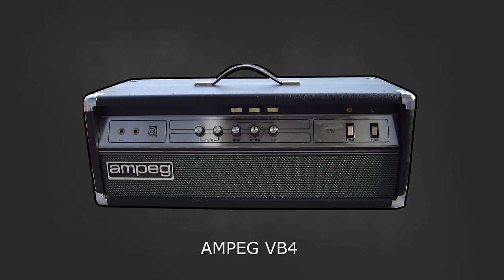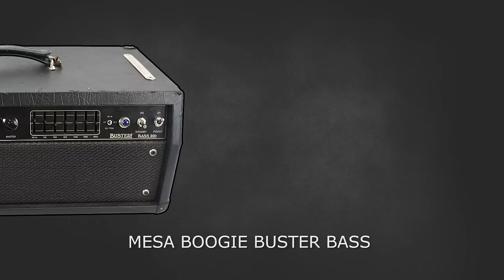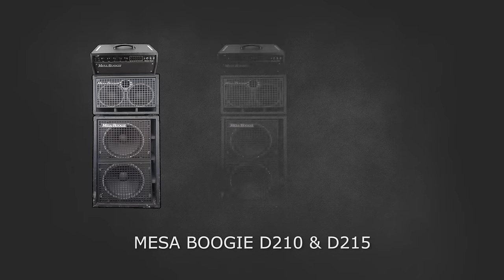Flea had a short stint using Ampeg heads and cabinets back in the first two albums before switching to Mesa Boogie in 1989. His boogie gear was a Buster 200 head with three sets of boogie cabinets, two 10s and two 15s.